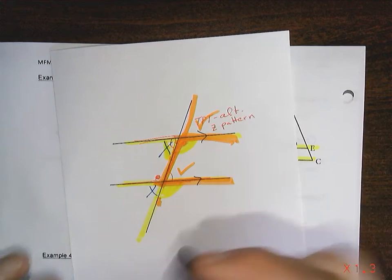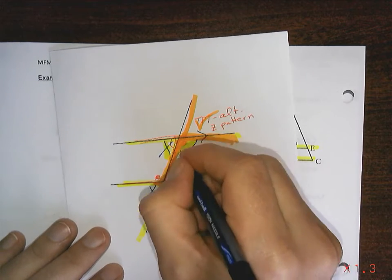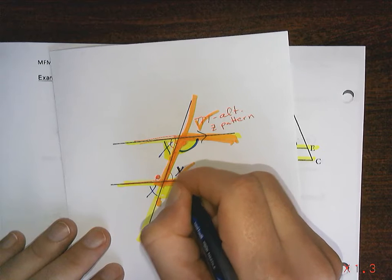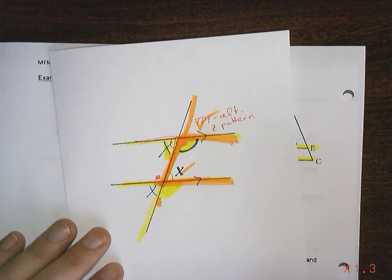Now the C pattern was the one that was in between. And that's where you had this angle and this angle. And they added up to 180 degrees.